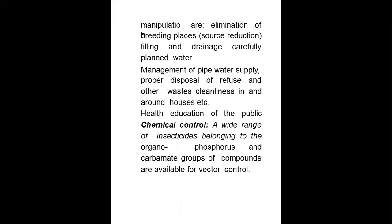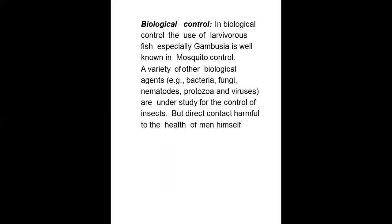Health education of the population. Chemical control: a wide range of insecticides belonging to the organophosphorus and carbamate groups of compounds are available for vector control. Biological control: the use of larvivorous fish, especially Gambusia, is well known in mosquito control. A variety of other biological agents, for example bacteria, fungi, nematodes, protozoa and viruses, are under study for the control of insects.